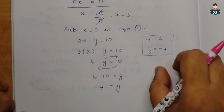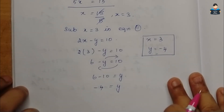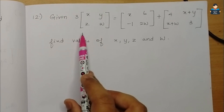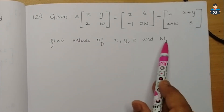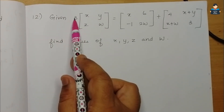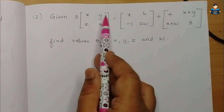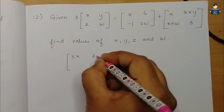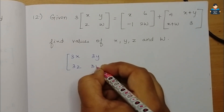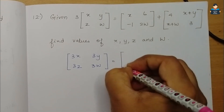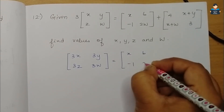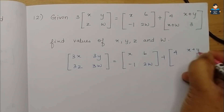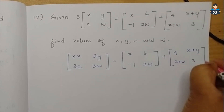So the value of x is 3 and y is minus 4. Now for Question 12, we have a matrix equation with variables x, y, z, w. The left side has [3x, 3y; 3z, 3w] and the right side has [x+4, 6+x+y; -1+z+w, 2w+3].